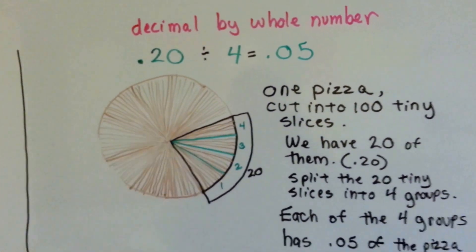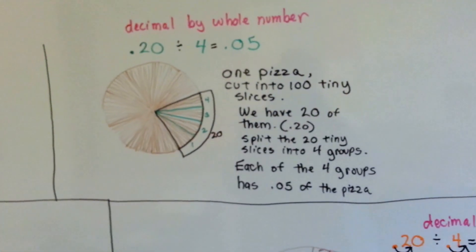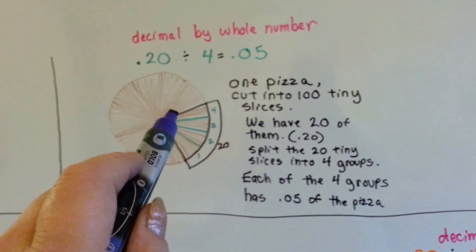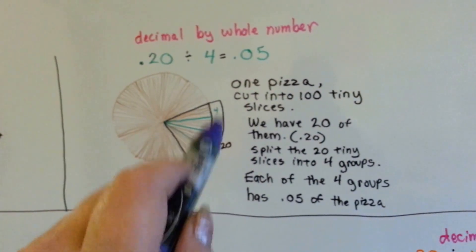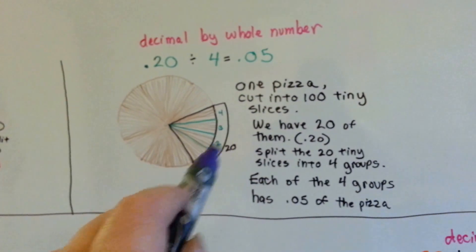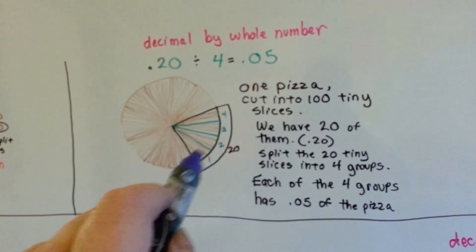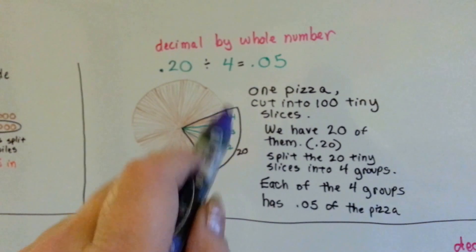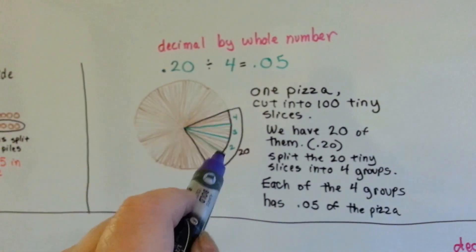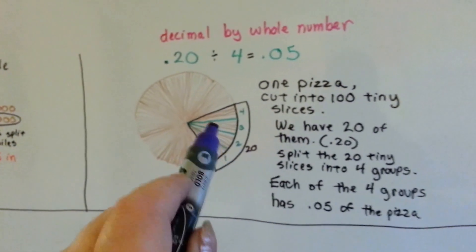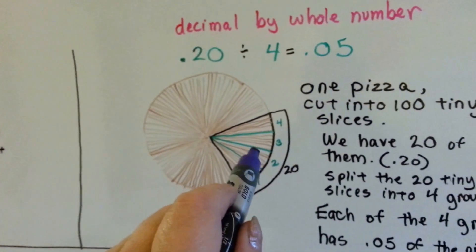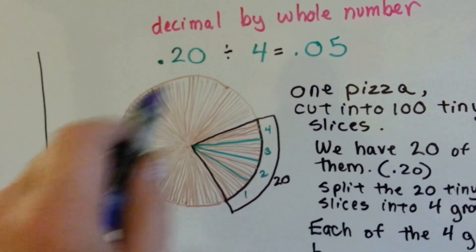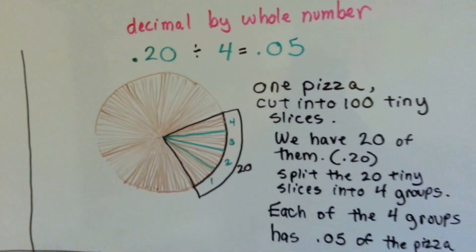Do you see? There's 100 slices. We got 20 of them — that's 20 of 100, 20 hundredths. We split that 20 hundredths into 4 groups, and each group had 5 of the slices out of the hundred. So it had 5 hundredths.